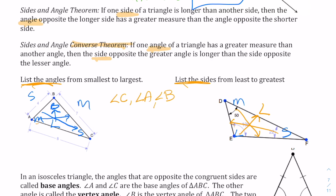To list the sides from least to greatest: the smallest is side DE — remember it's a segment so we draw a segment above it — then the medium is EF, and then the longest is DF. Those are some of the theorems about triangles.